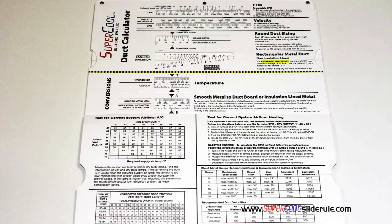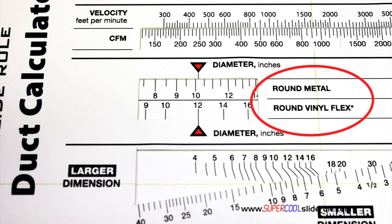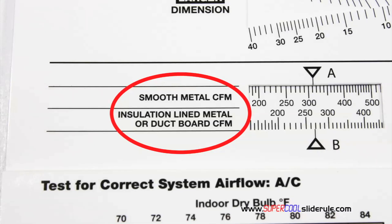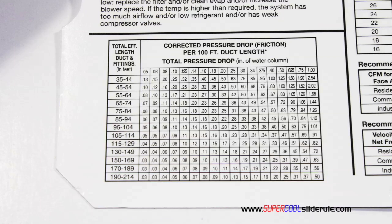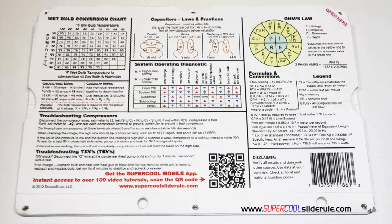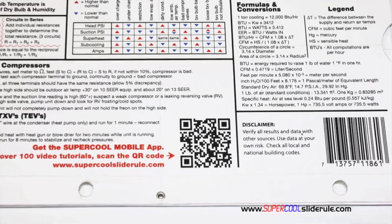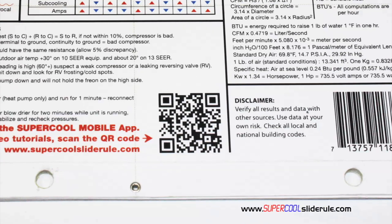Inside is packed with even more information. It performs sizing of both metal and flexible duct. It has the only direct reading conversion from smooth metal to insulation-lined metal we've ever seen. The majority of technicians have never been taught that if the insulation is on the inside of the ductwork, you cannot size it with a regular duct calculator. It has step-by-step directions for determining airflow through a gas furnace, electric furnace, or an air conditioning unit. It has pressure drop multipliers for ductwork, as well as recommended velocities. And finally, the scanning of this QR code gives instant access to over 100 tutorials to assist the technician with every test and repair imaginable.